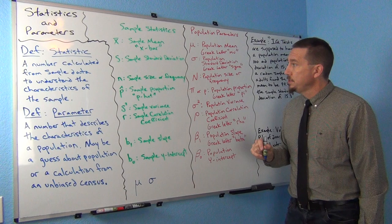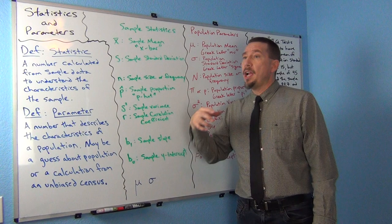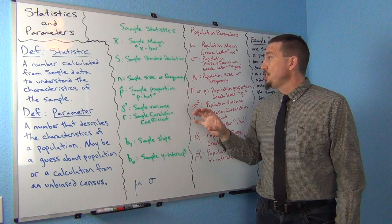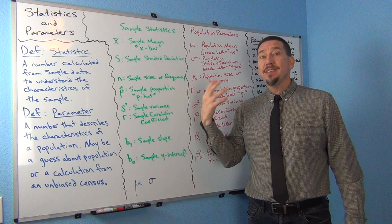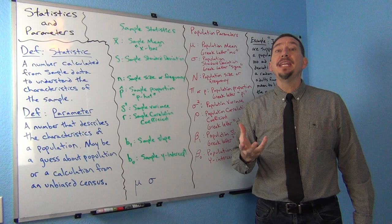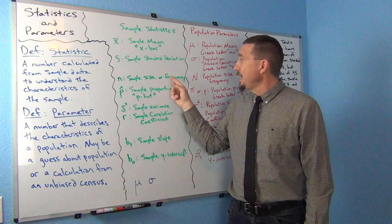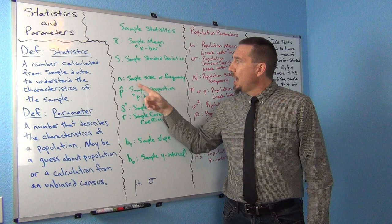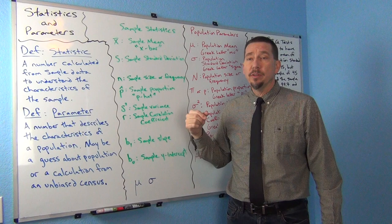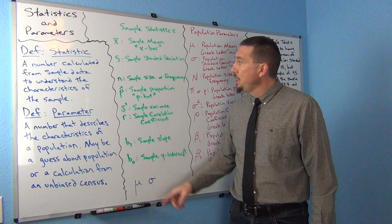How many people are in your sample or population is very important information. Statisticians have to keep track of sizes, and one sampling bias we can have is that our sample data was too small. The sample size or sample frequency is lowercase n — how many numbers or values are in your sample data.